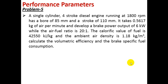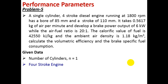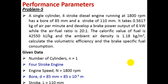Problem number 5: A single-cylinder 4-stroke diesel engine running at 1800 RPM has a bore of 85 mm and a stroke of 110 mm. It takes 0.5617 kg of air per minute and develops a brake power output of 6 kW, while the air-fuel ratio is 20:1. The calorific heat value of fuel is 42,550 kJ/kg and the ambient air density is 1.18 kg/m³.